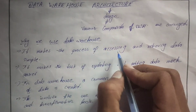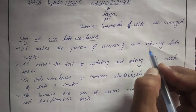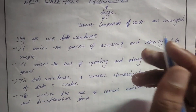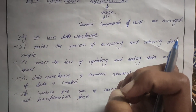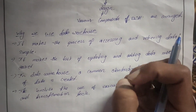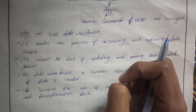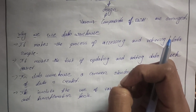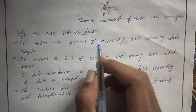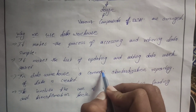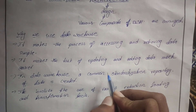Why do we use data warehouse architecture? It makes the process of accessing and retrieving data simple. You are accessing data by using OLAP tools or reporting tools, and it makes that very simple. It also makes the task of updating and adding data much easier.